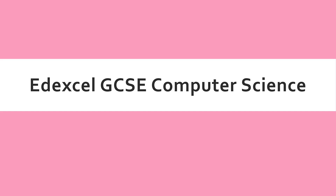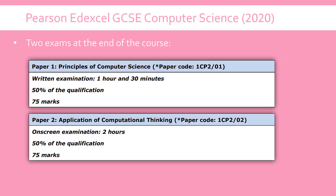I'm going to be introducing my set of videos relevant to the EdExcel GCSE Computer Science Paper 2 and just going through how this Paper 2 works, because it is certainly the more interesting exam of the two. It's worth exactly the same amount of marks and overall percentage as Paper 1, but unlike Paper 1, it is an exam on the computer, so it will be a little bit different to all of your other subjects. The formal name of it is Application of Computational Thinking, and the word 'application' is definitely relevant here because you are actually doing the programming live in the exam.